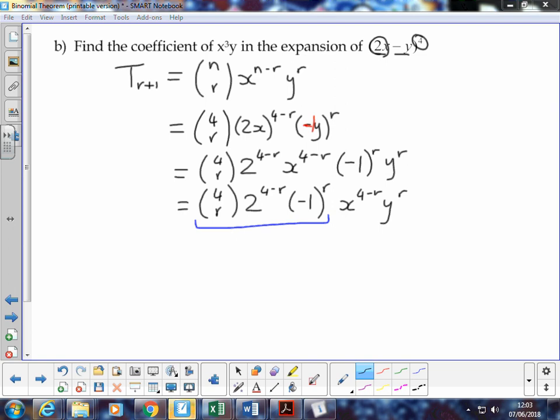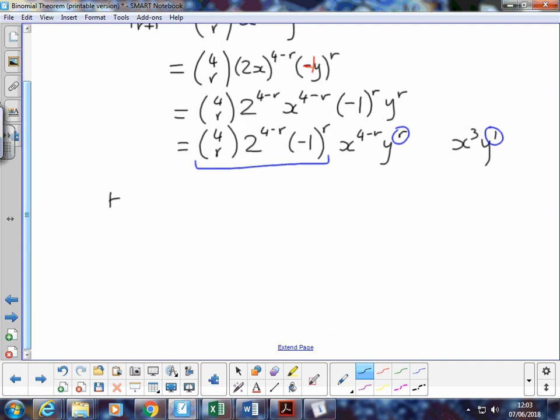What do we want? Well, we want x cubed, back up in the original question, x cubed y. Okay, I'll write it at the side here, x cubed y. In other words, y to the power 1. So by comparing the two forms here, we can see that we want y to the r is going to be 1. So if we want the x cubed y term, we want r to be 1. So write that down.